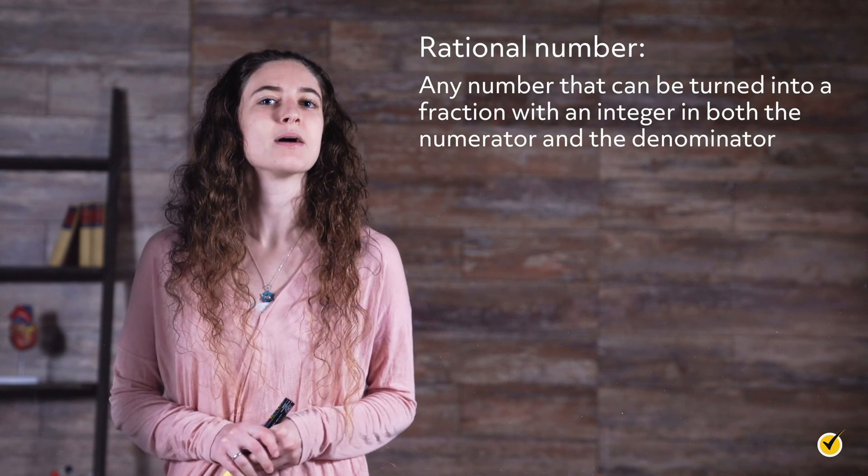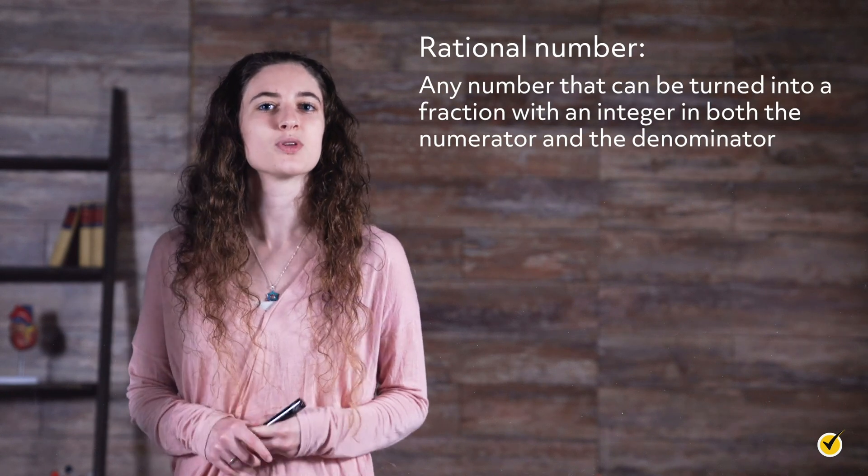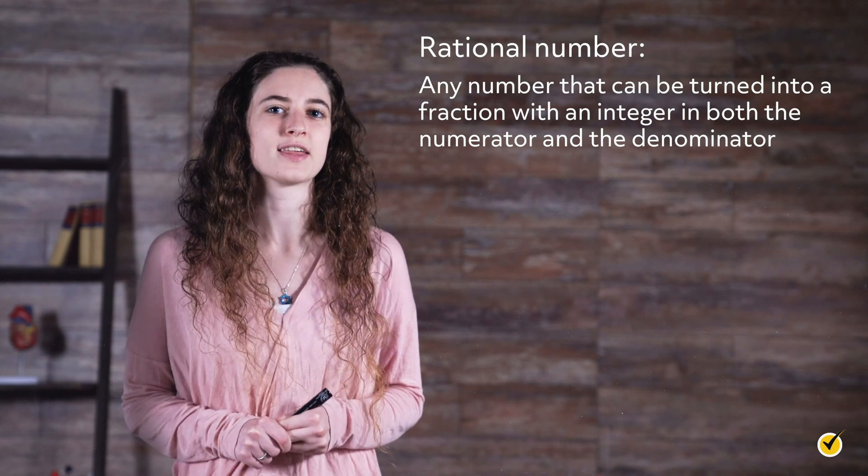First, let's review the definition of a rational number. A rational number is any number that can be turned into a fraction with an integer in both the numerator and the denominator.